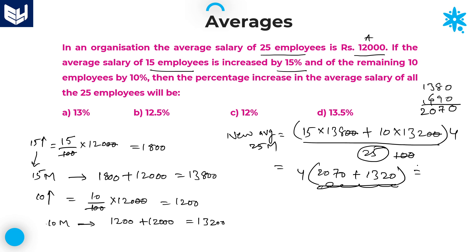After cancelling zeros and multiplying by 4: 339 into 4 — units place is 6, then 9 into 4 is 36 carry 3, then 3 into 4 is 12 plus 3 is 15 carry 1, then 3 into 4 is 12 plus 1 is 13. So the new average of 25 members is 13,560. But the question is not asking for the new average directly.